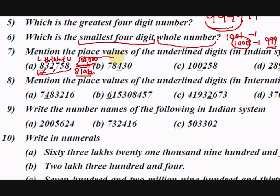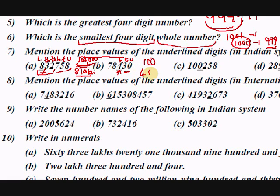Mention the place values of the underlined numbers. Take the digit 4 — how many digits follow it? Two digits follow it, so 4 is in the hundreds position. Units, tens, hundreds — 4 is in hundreds. The face value is 4, place value is 100, and combined they give 400.